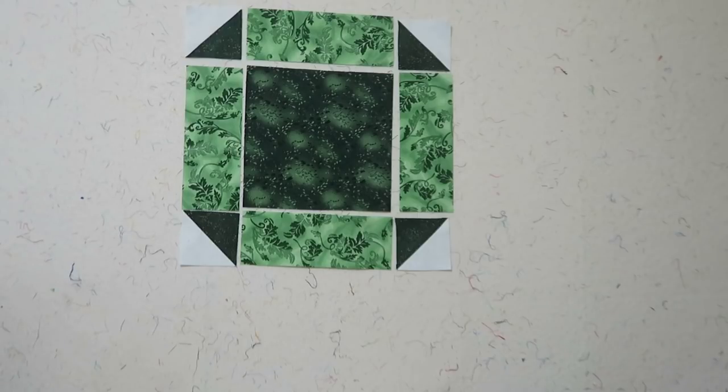For my half-square triangles, this time I actually die-cut them with the die for my AccuQuilt Studio system, and I got those already sewn together. This block is pieced as a giant nine-patch block, so there isn't anything fancy about this block. I'll just go ahead and piece this block and then come back.